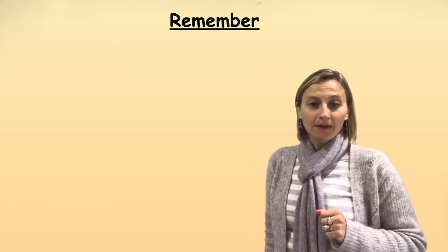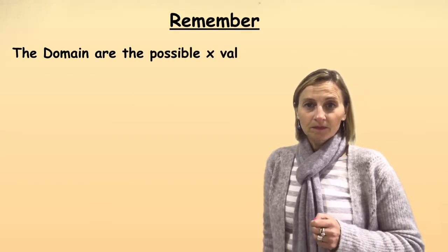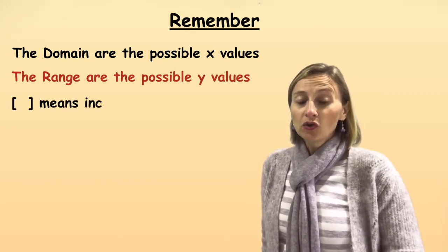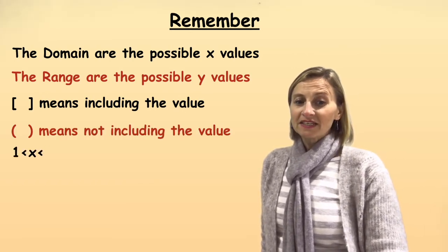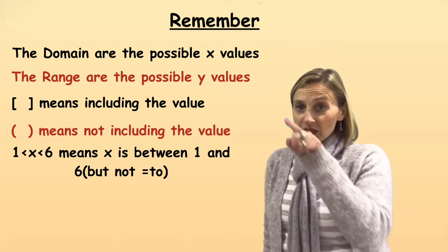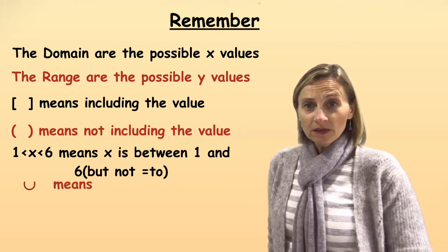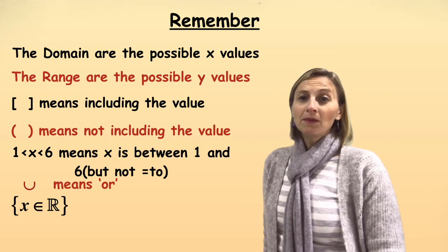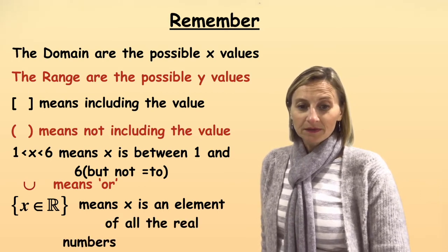So let's think about what we actually need to remember. The domain are the possible x values. The range are the possible y values. The square brackets mean that you include the values. The round brackets mean you don't include the values. 1 < x < 6 means x is between 1 and 6, but not equal to — because if we wanted it to be equal to, you'd need to put the less than or equal to signs. That funny U shape in interval notation means 'or' — or together with. And the curly brackets with x is an element of ℝ means x is an element of all the real numbers.